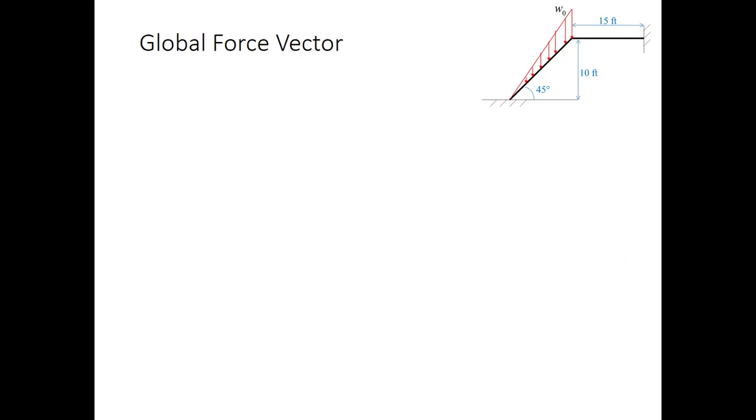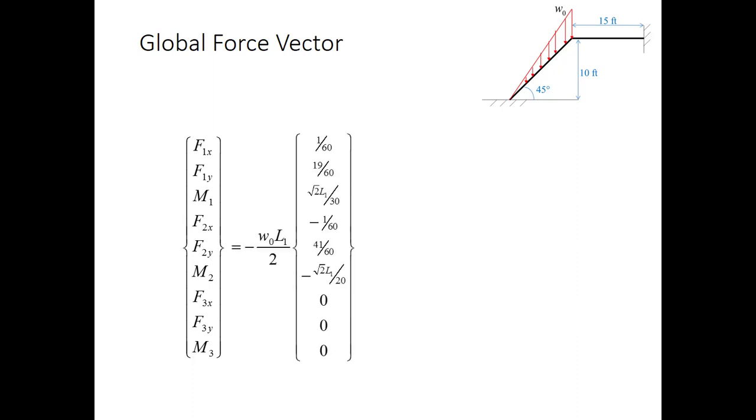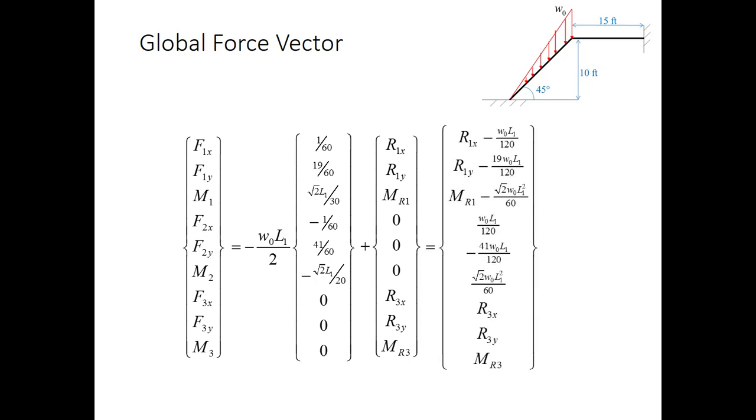Now that we know the nodal forces from the distributed load, we can put that together with the point loads and get the global force vector. The global force vector is going to have nine terms corresponding to a horizontal force, a vertical force, and a moment at each of our three nodes. We're going to add in the nodal force vector that came from the distributed load, where I've extended it to include zeroes for node three. Then we're going to add to that the point forces that are at the reactions, R1 and R3. Putting those together, we get a global force vector that has point loads and equivalent nodal forces included, and this is what we need to put together our full system equation, KD = F. We'll do that at the beginning of the next video, and then go through the solution process.